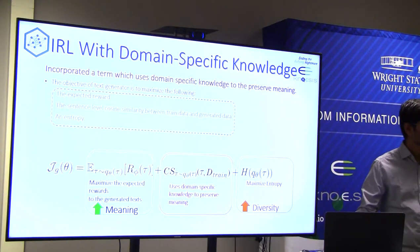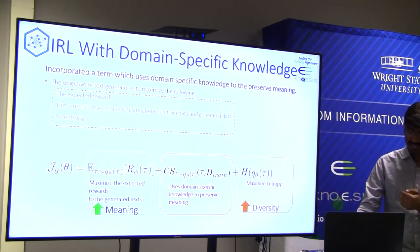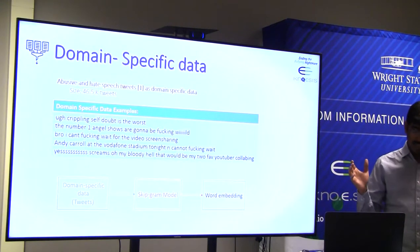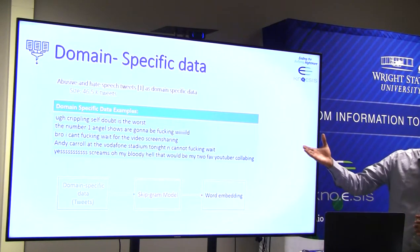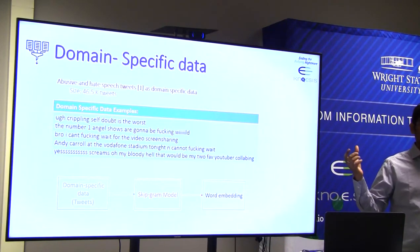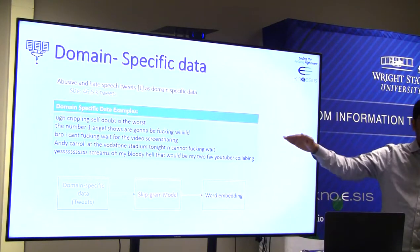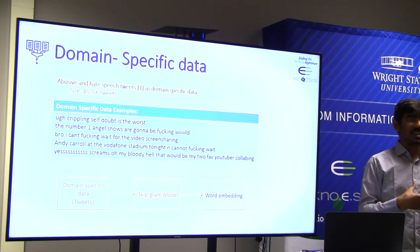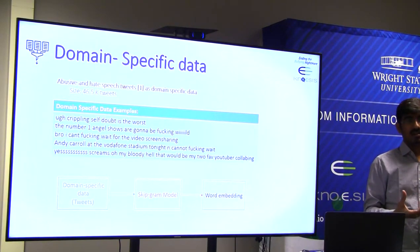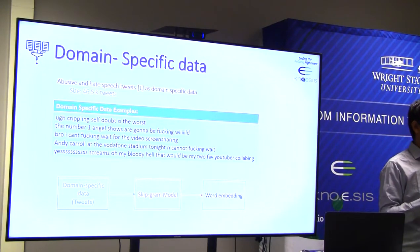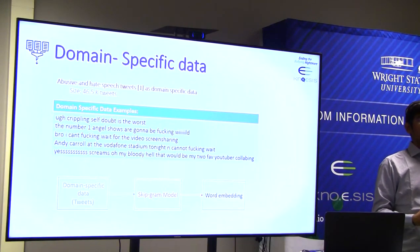For domain-specific data, we used tweets from the dataset — 46.5k tweets — which have strong language but are labeled as normal tweets. We use this dataset to generate embeddings because it is the closest dataset available for the domain. We use a skip-gram model to generate word embeddings, and use those word embeddings to measure cosine similarity between generated samples and training data.